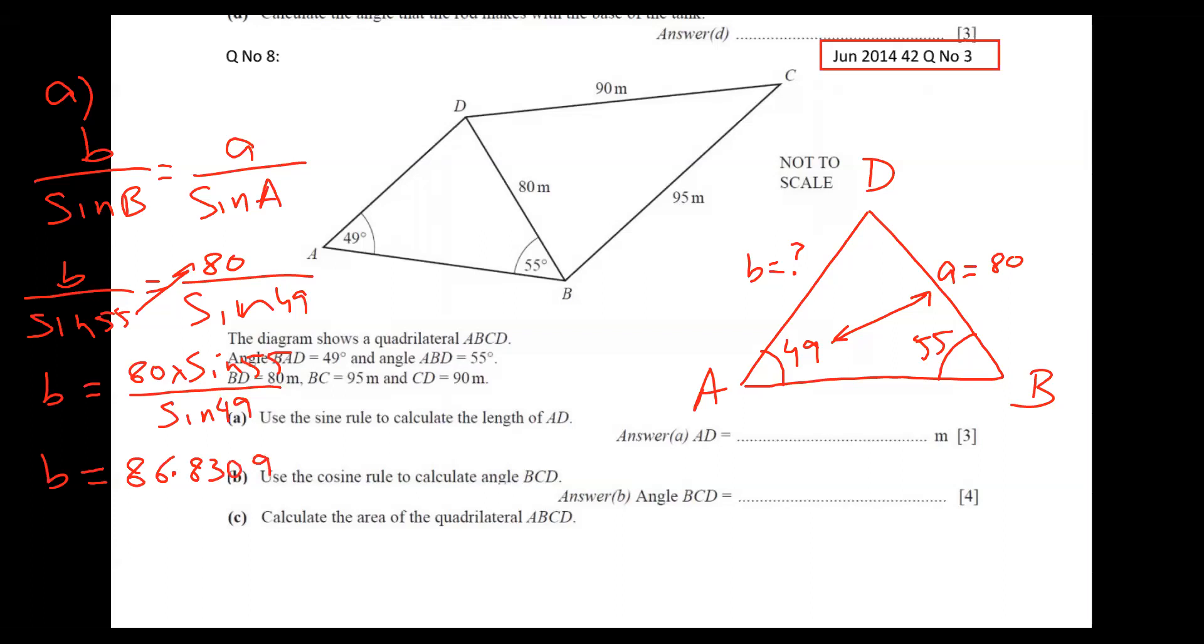And the answer is coming 86.83096. But you know, every answer we have to give 3SF. 3SF means I need first digit, second digit, third digit. But fourth digit I don't want. Which you don't want - if it's bigger than four, then we add. Otherwise we will not add. And B is called AD, so we got AD answer: 86.8 meters.